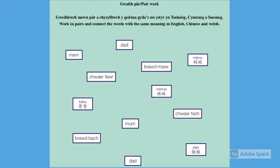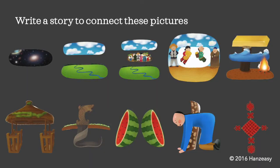The multilingual approach supports learners' progress through making links across languages. This is an example of a multilingual activity designed to develop students' literacy skills across Welsh, English and Mandarin. Here's a video of a student trying to memorize how to write Chinese characters for 1 to 10 by telling a story he wrote in Welsh.